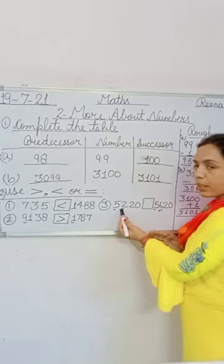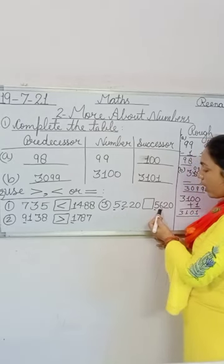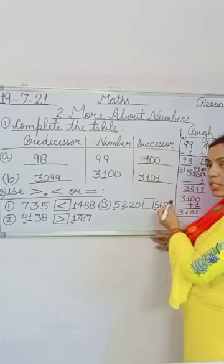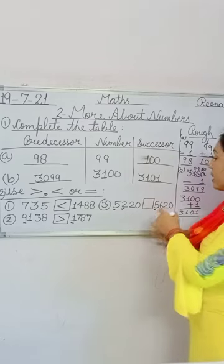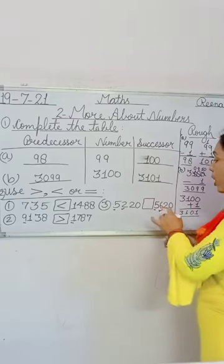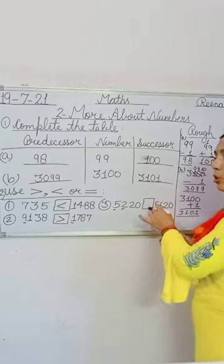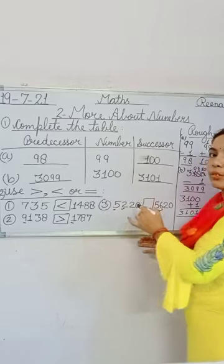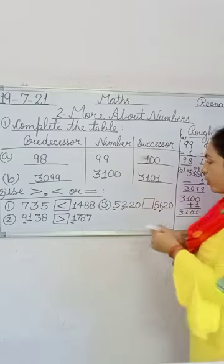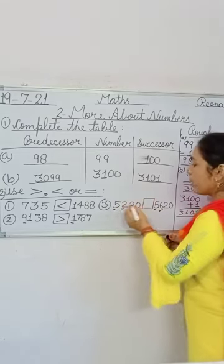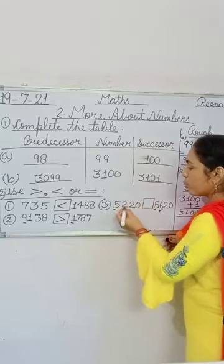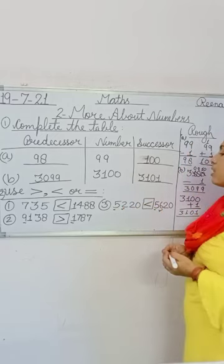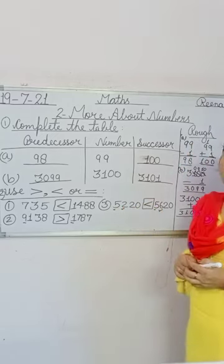So the complete number 5620 is greater than 5220. That means 5220 is less than 5620.